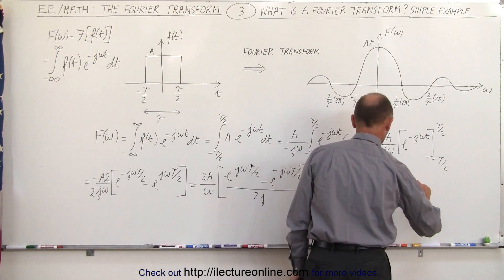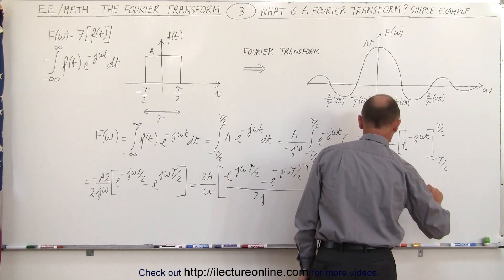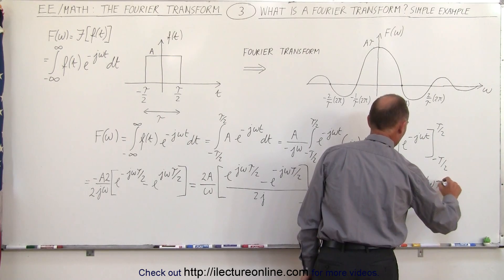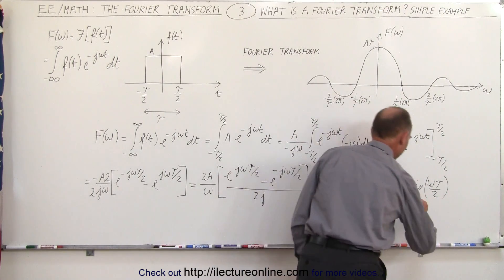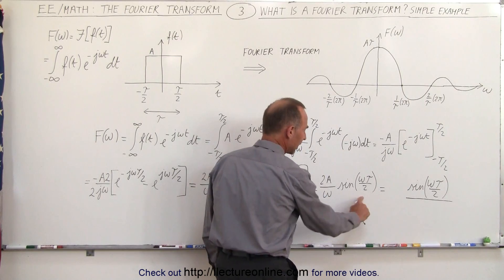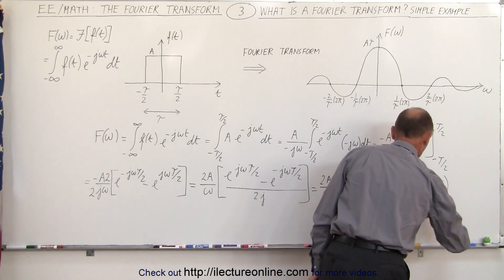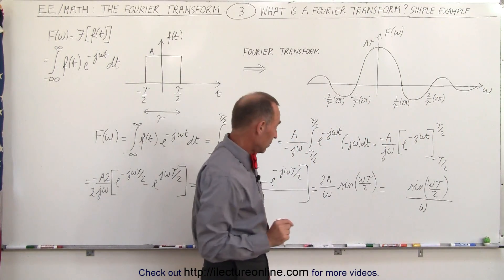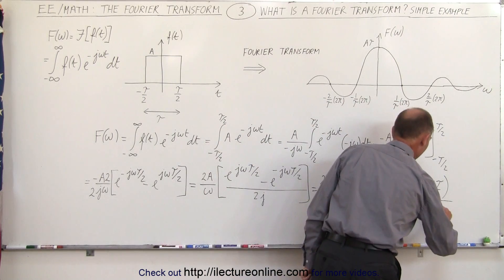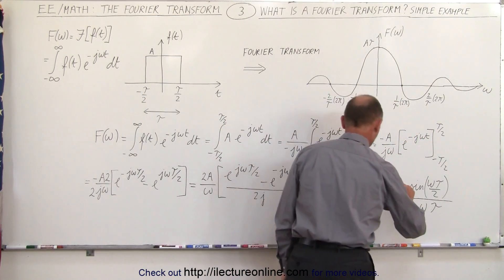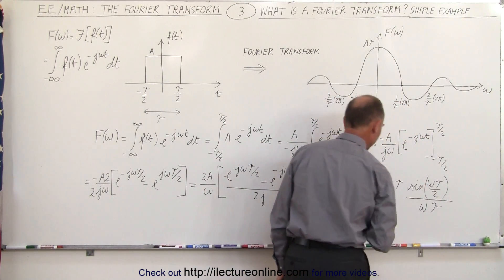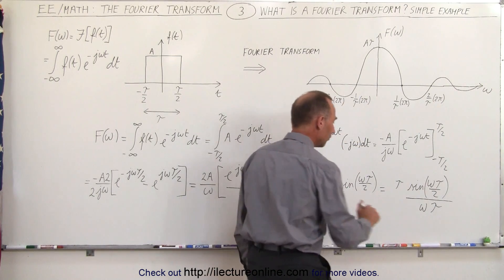So this is equal to the sine of omega tau over 2 and we're going to divide this by omega now we already have an omega here so we'll put it over here. Now we also need a tau so we're going to divide by tau and we're going to multiply it by tau so we're going to need a tau in the numerator and we need to divide by 2.